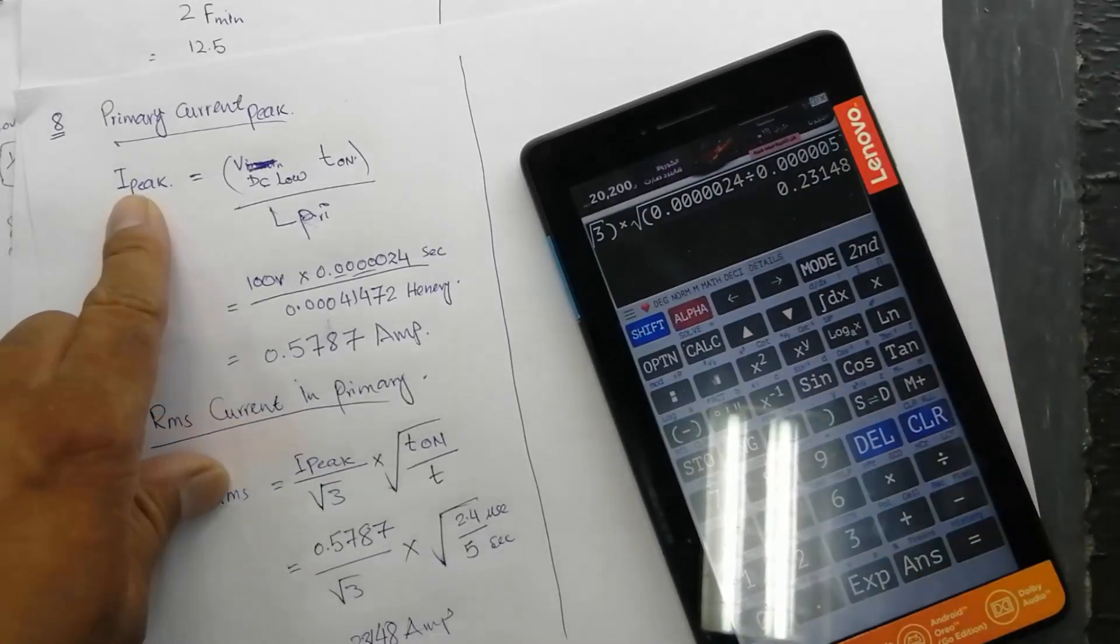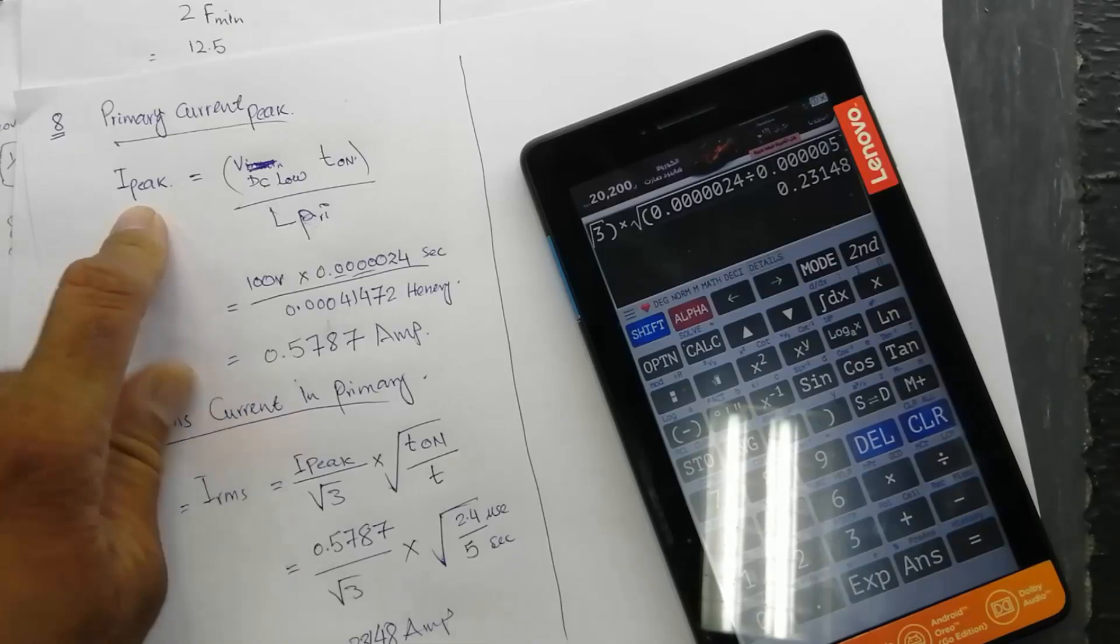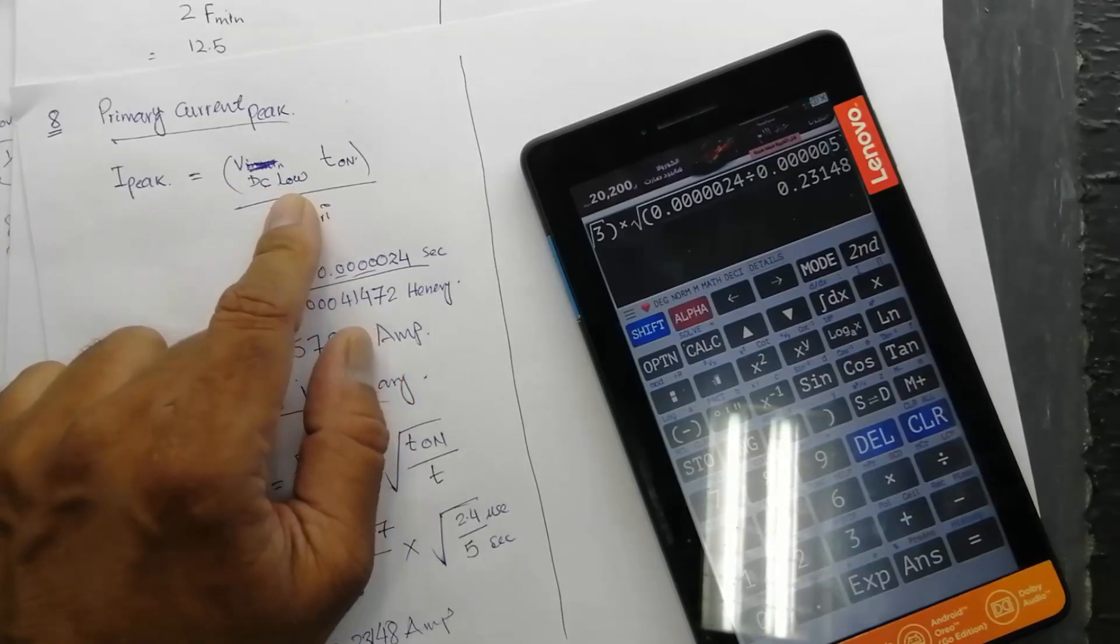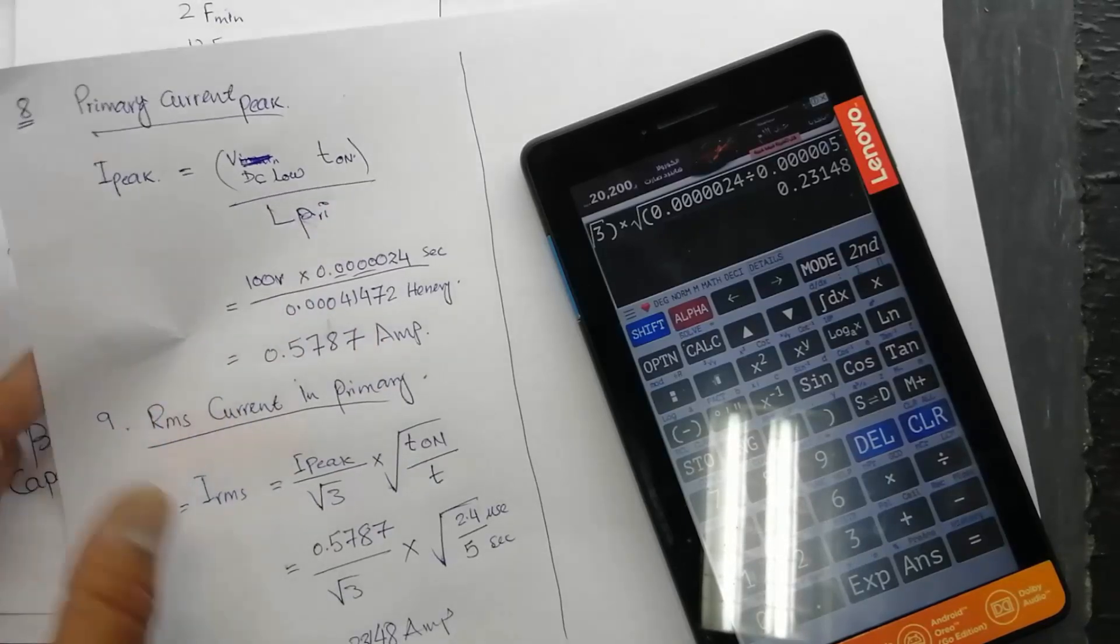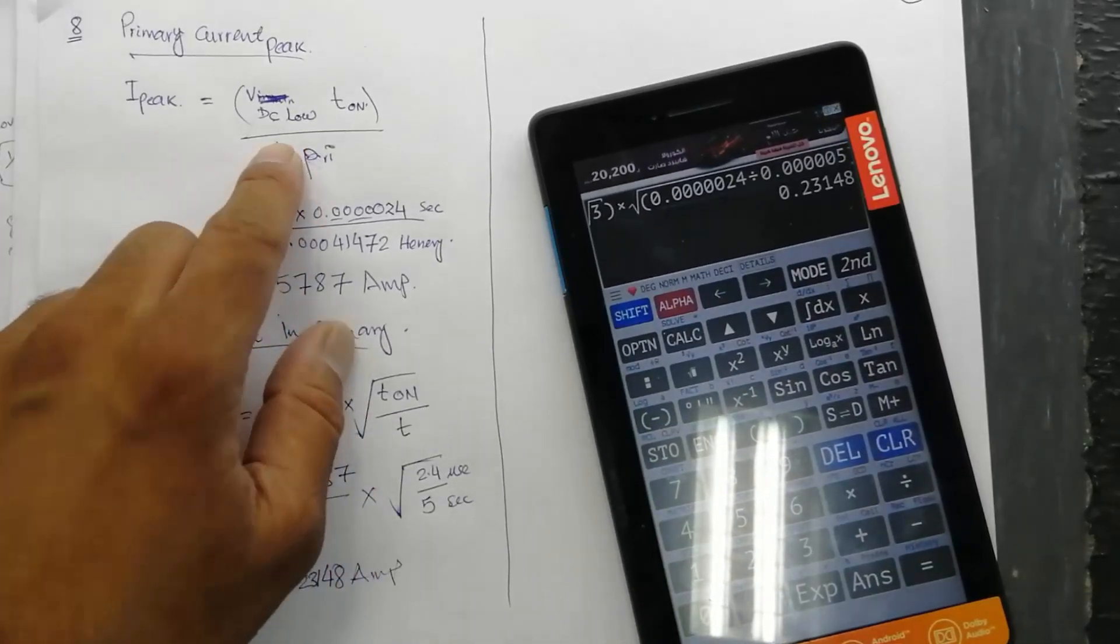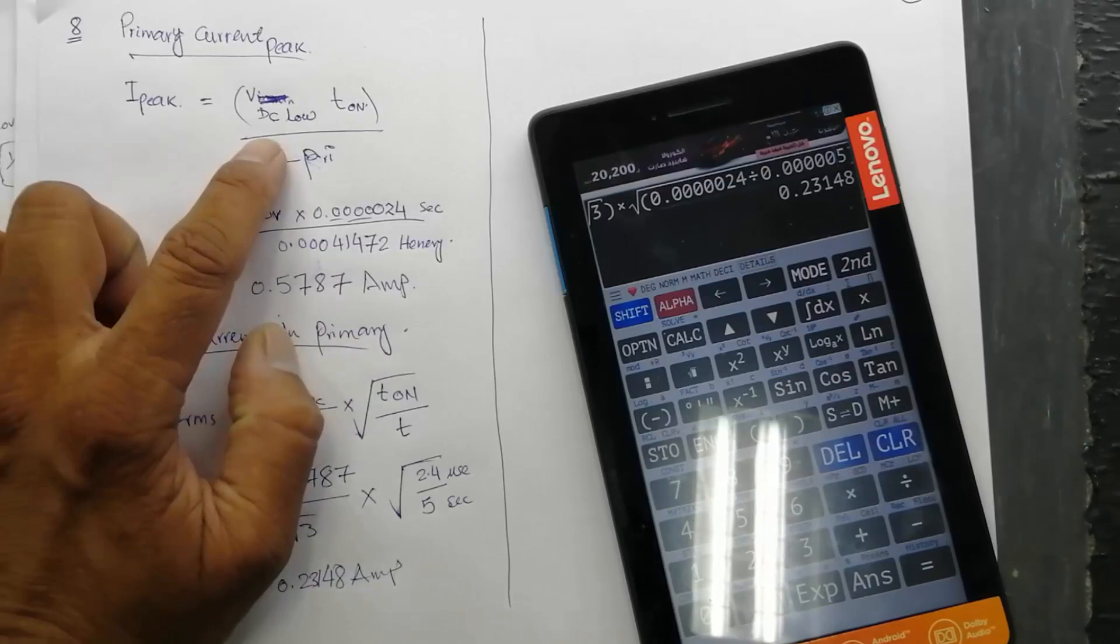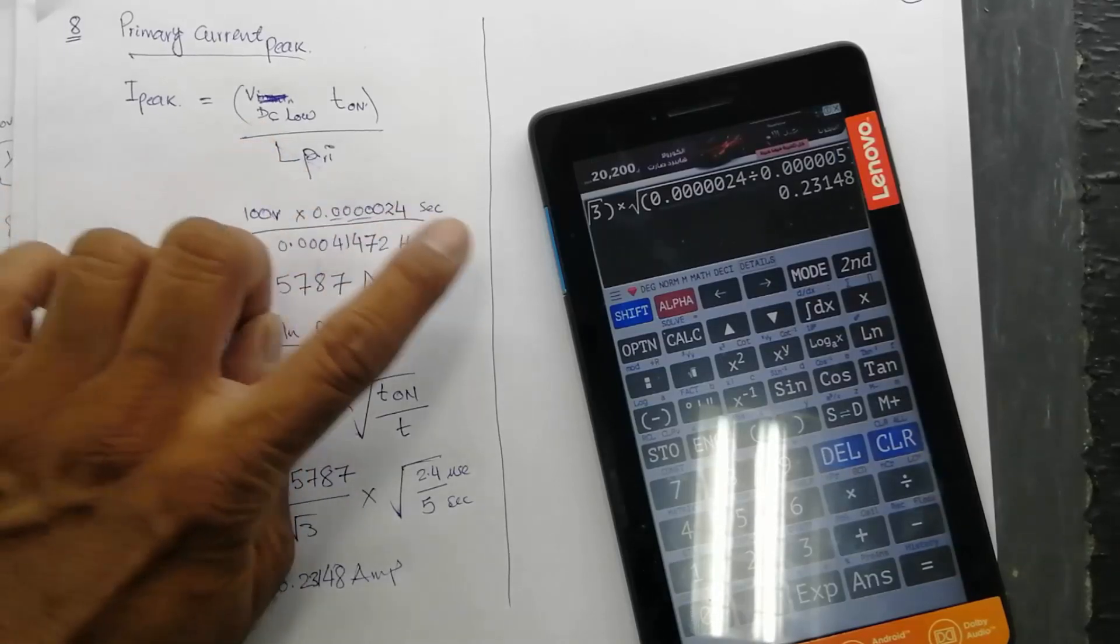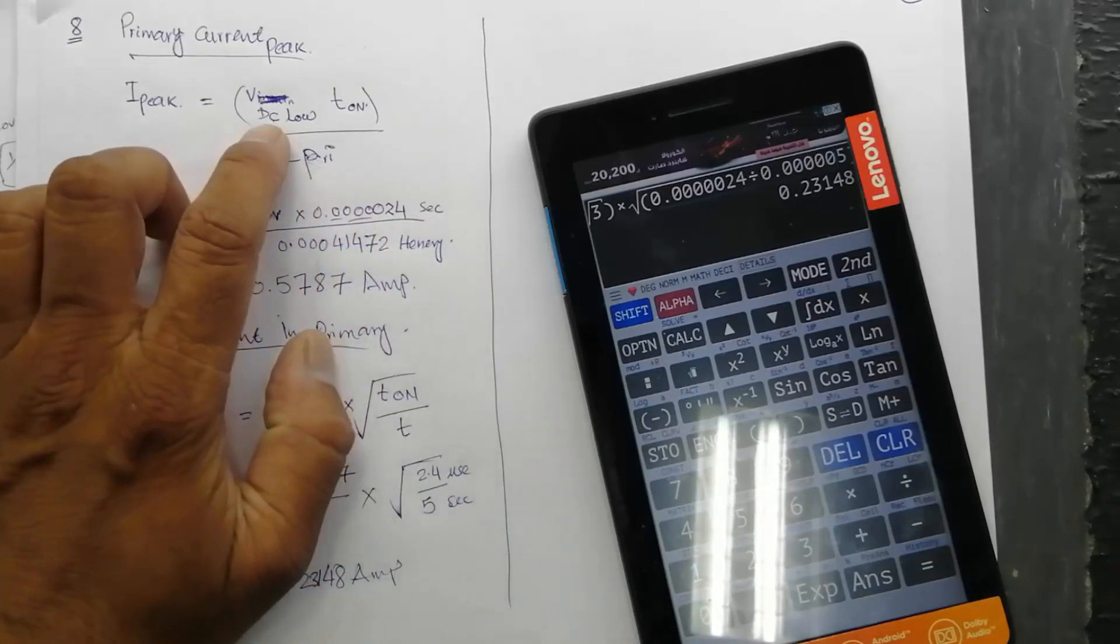In this session we discussed I_peak, the maximum amount of current that can flow in the primary winding. Why we select VDC_low? Because this calculation is in worst case scenario. The worst case is we need maximum output at the lowest input voltage. Maximum power out, we need 10 watts at lowest DC level.